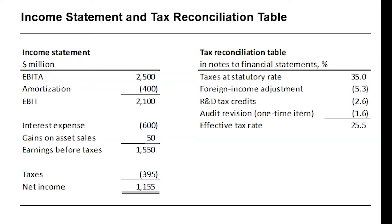The rest of the entries in the tax reconciliation table tell us how we adjust the effective rate for all of these tax credits. So we pay 5.3% less than 35% because some of our income was earned at a lower rate. We pay 2.6% less because we get an R&D tax credit of 40 million. And then 1.6% less because of a one-time audit revision credit. Subtracting all those percentages from 35%, we get 25.5%. We use these two tables in conjunction to try to back out what income was earned where and what the appropriate operating tax rate is.